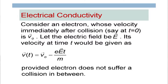At a time t, if the electron has not suffered a collision since t=0, its velocity is given by v(t) = v₀ − (eE/m)t. The force on the electron is eE with a negative sign, so acceleration is eE/m, and applying the kinematics equation gives the velocity at time t — provided the electron does not suffer a collision.